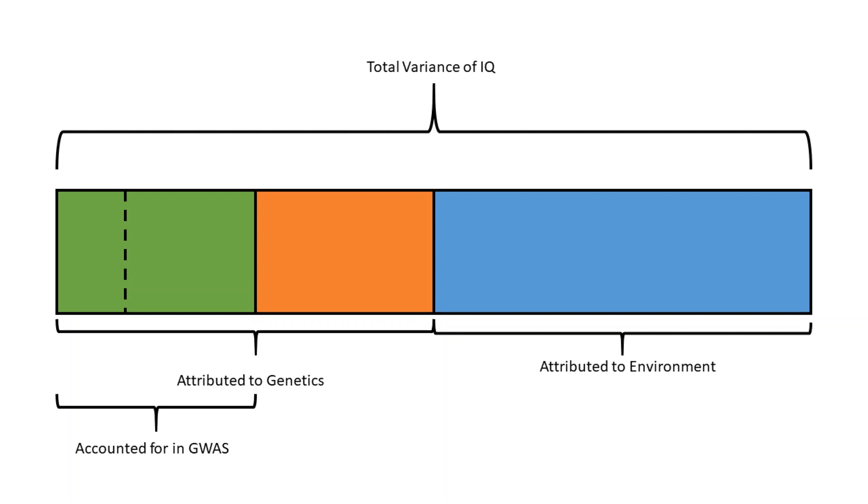Genomic research into polygenic traits is still, however, a very young field and the percentage of variance which can be accounted for is growing as sample sizes become larger and methodologies become more precise.